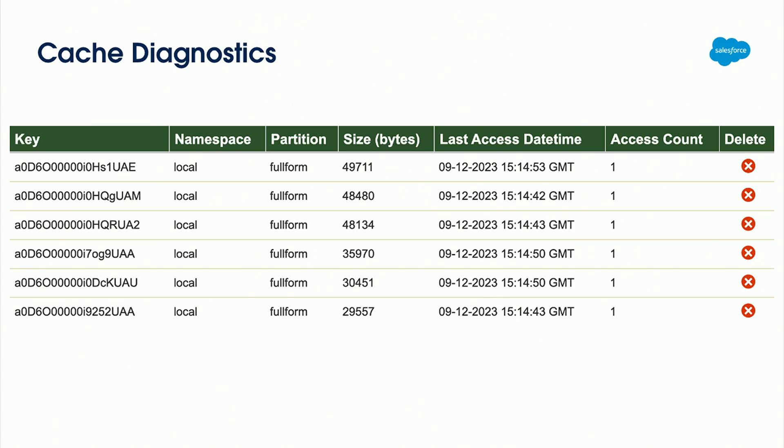You also have the ability to purge individual records from the cache using the side column. You also have the ability on the main screen to refresh the entire cache — if you know something significant has changed and you don't want anyone getting stale data, you can manually push all that data out.